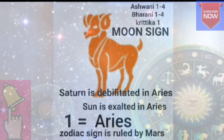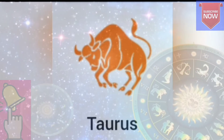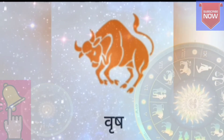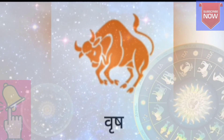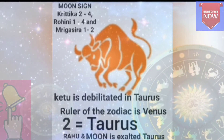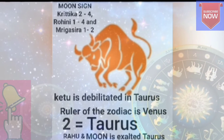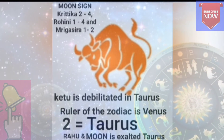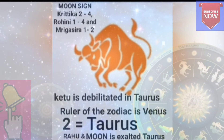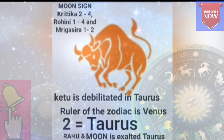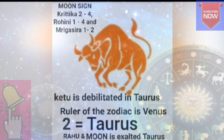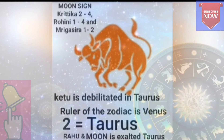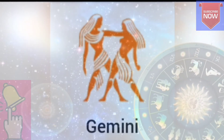Taurus, number 2, is called Vrishabh in Hindi. Taurus is ruled by Venus. Ketu is debilitated in Taurus; Rahu and Moon are exalted in Taurus. It contains the nakshatras: Krittika 2 to 4 Pada, Rohini 1 to 4 Pada, and Mrigashira 1 and 2 Pada.